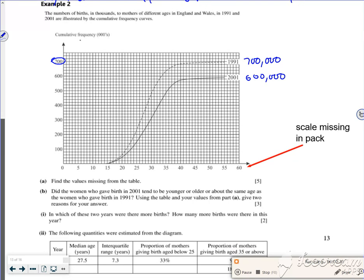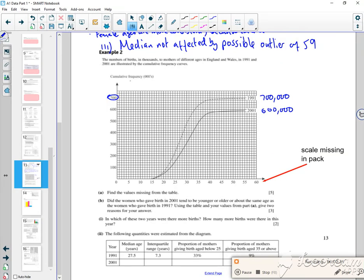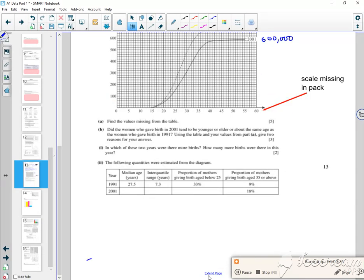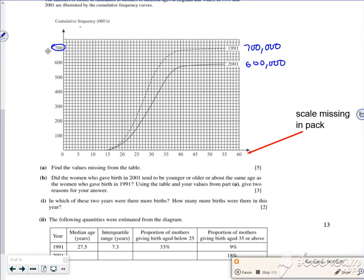Right so it says find the values that are missing in the table of data. Right so what information do I need there? Let's have a look.